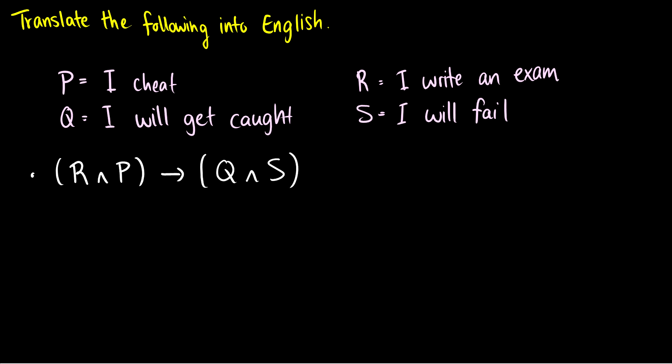So I am just going to read this out. So R and P arrow Q and S. And this can be translated to if R and P, then Q and S. So how can we translate this into English? Well, let's do the arrow in a color. So we have if a bunch of stuff, then some more stuff. And let's do the first bit first. So this is and with the conjunction. So what is R? Well, R is if I write an exam. And then we have our connective and.